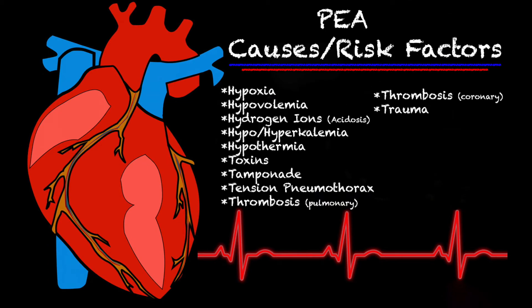When it comes to the causes and risk factors of PEA, this is where we go into checking our H's and T's — I've done a video about this and I'll link it in the corner. This is something we should do during the course of every cardiac arrest. Some of the risk factors of PEA include hypoxia, hypovolemia, excessive hydrogen ions (also known as acidosis), hypo- or hyperkalemia, hypothermia, toxins, tamponade, tension pneumothorax, pulmonary thrombosis, coronary thrombosis, and trauma. These are all causes and risk factors of PEA that we need to check throughout the course of a cardiac arrest because some of them we can attempt to fix.